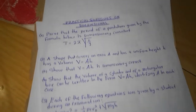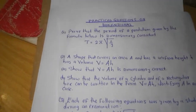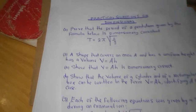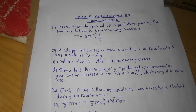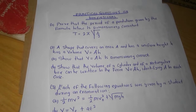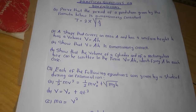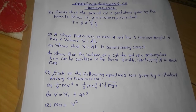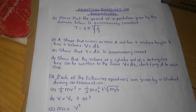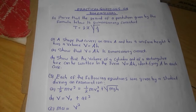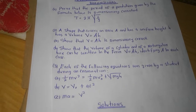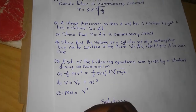I've got some good practical questions on dimensional analysis and I'm going to solve these questions. The first one says: prove that the period of a pendulum given by the formula below is dimensionally correct.